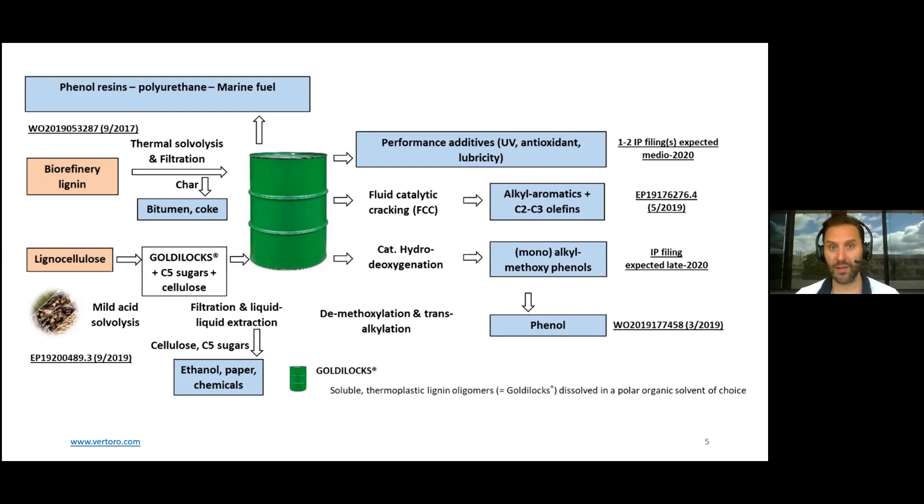This is the same proposition we offer to phenolic resins manufacturers, but also polyurethane. We can swap solvents and go to polyol instead. Then we have liquid polyols with 10, 20, whatever percent of these lignin oligomers solubilized in them and bring this liquid blend to a polyurethane producer.